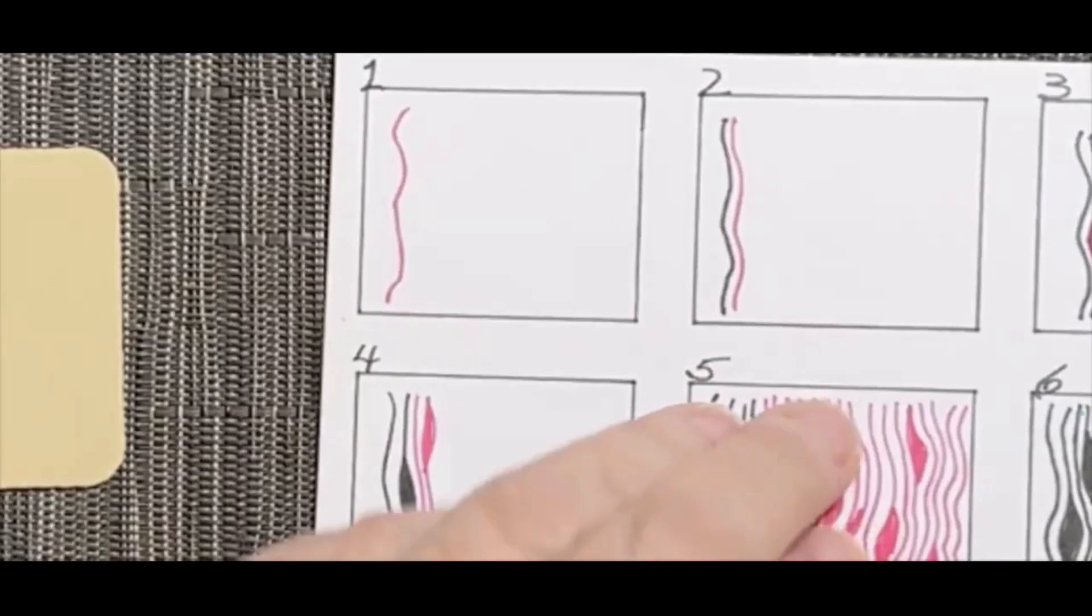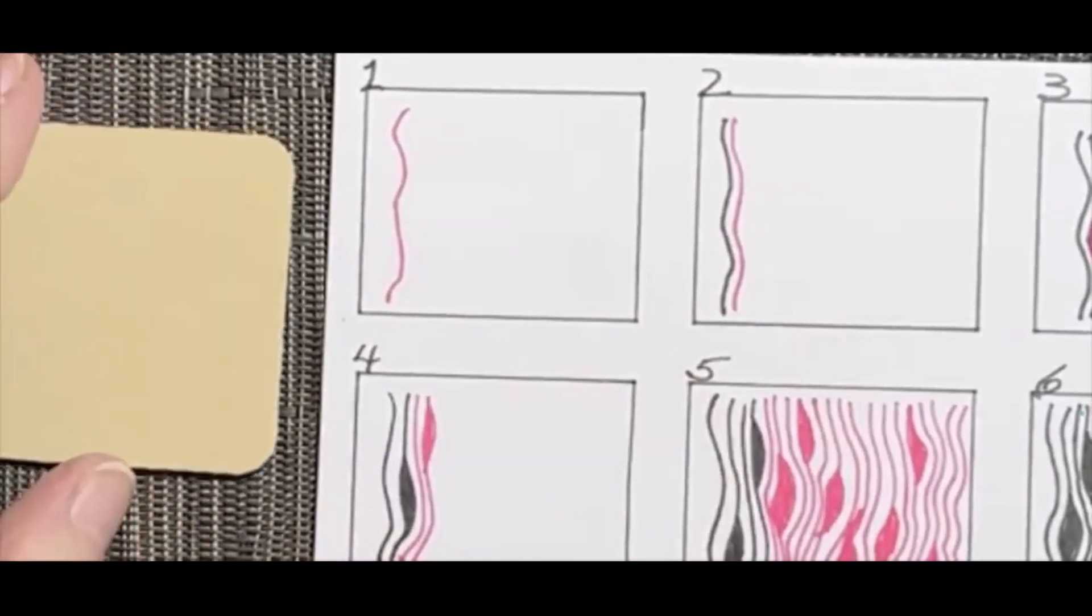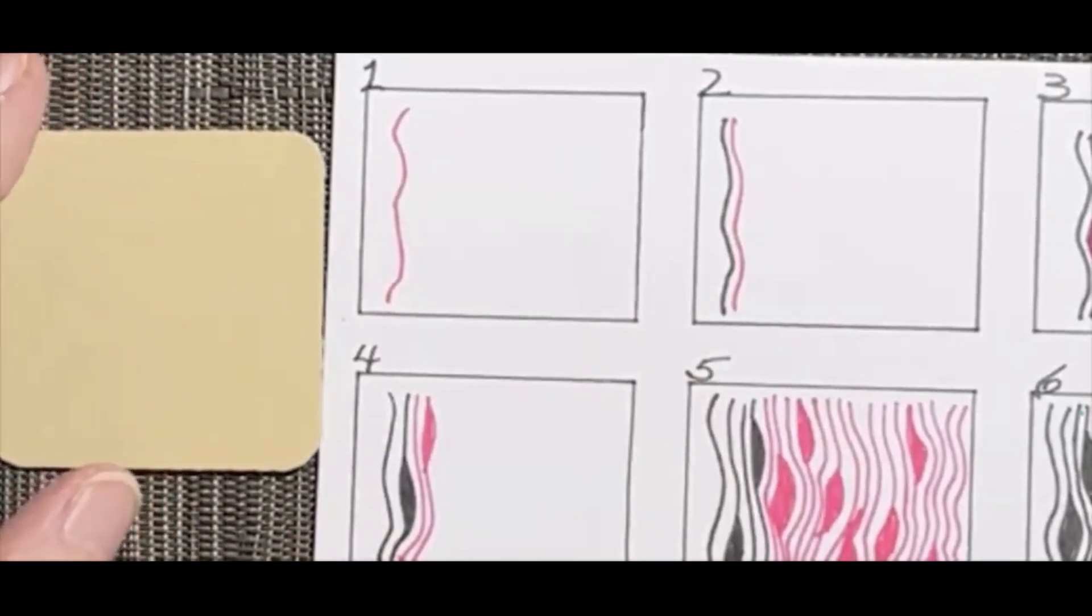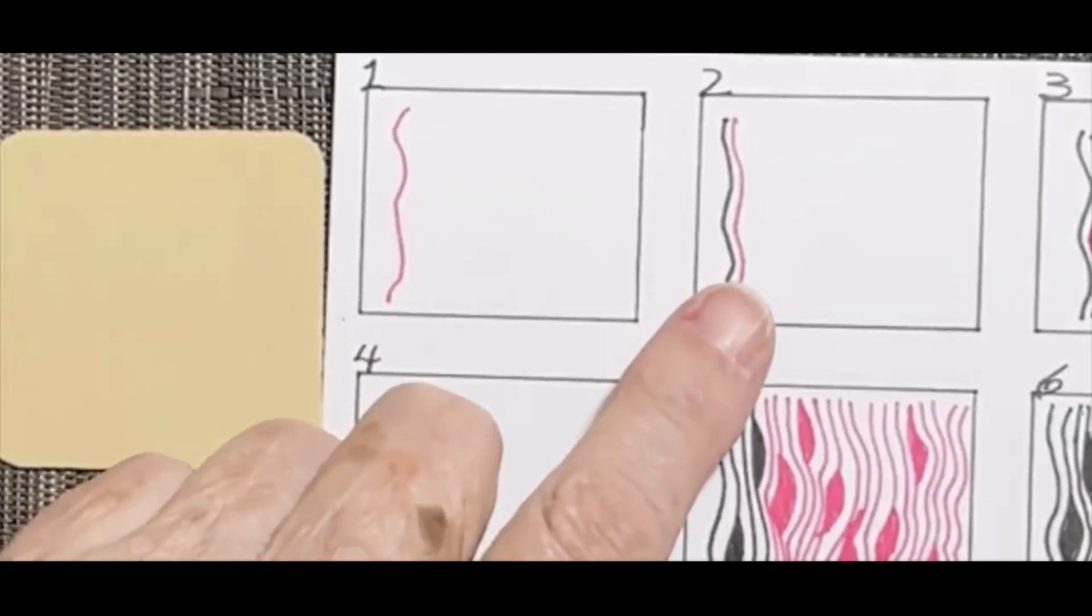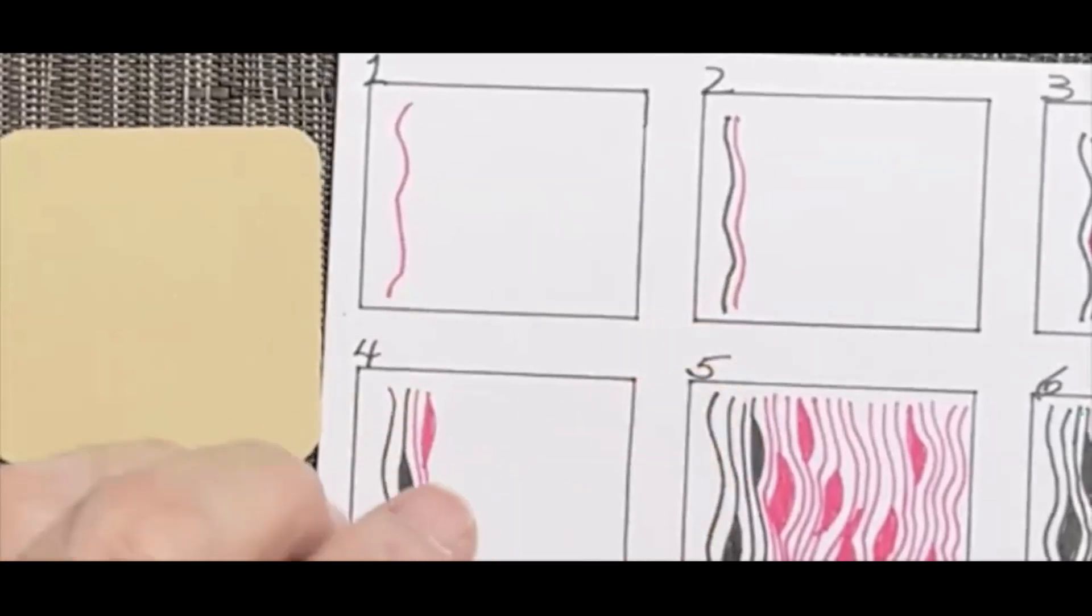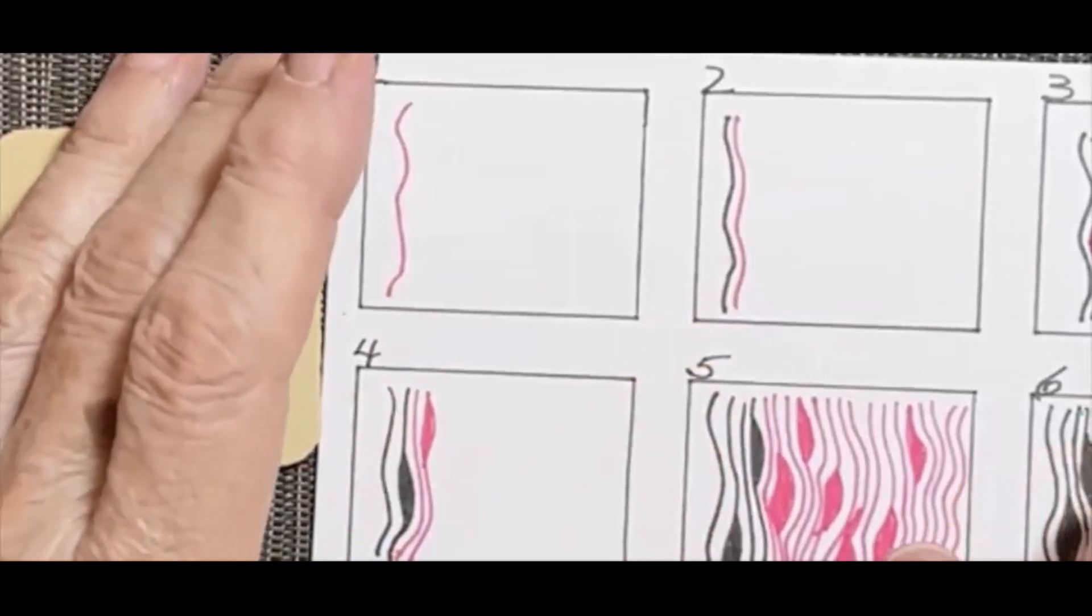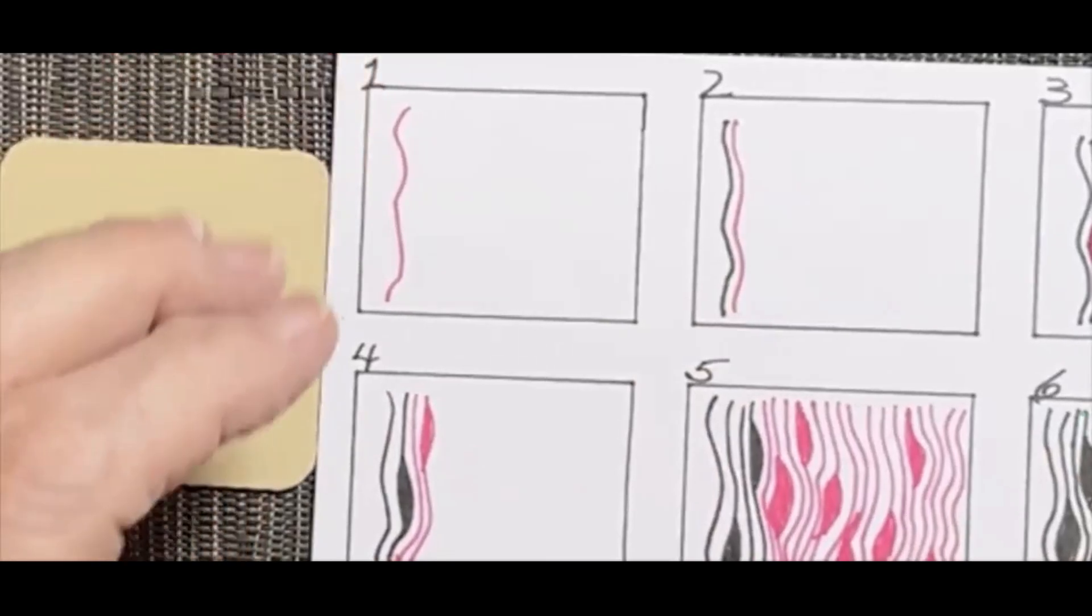Step one. So we're going to make some squiggly lines. And so this is really good. And then we're going to do a parallel or a line. And then we move into starting to add the ink in the line, which is a really fun, fun process.